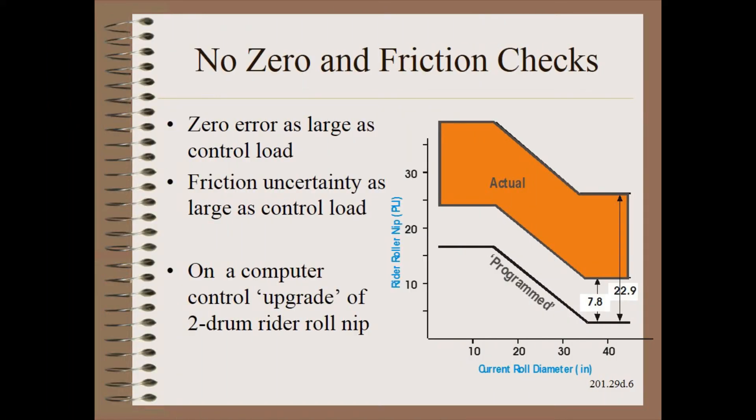This last example was not from a builder but rather from a third-party integrator who upgraded the controls of a rider roll nip to computer control. Unfortunately, the electrical engineer did not know how to calibrate zero, much less how to measure uncertainty.